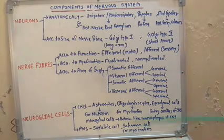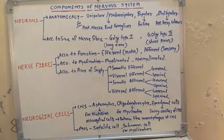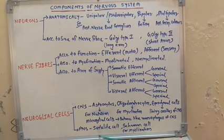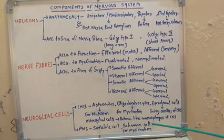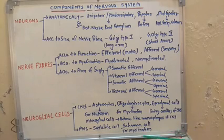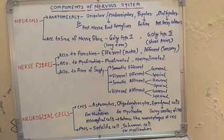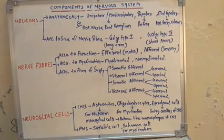In the peripheral nervous system, there are two main types of neuroglial cells: satellite cells and Schwann cells. We already know the function of Schwann cells — they participate in the myelination process in the peripheral nervous system. This is all about the components of the nervous system. Thank you.